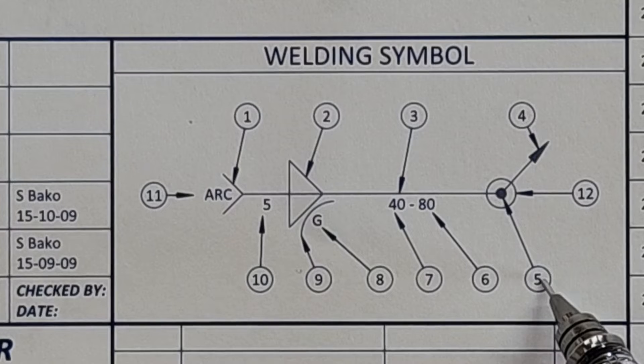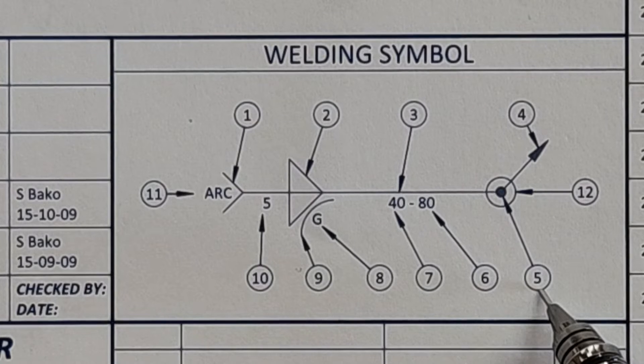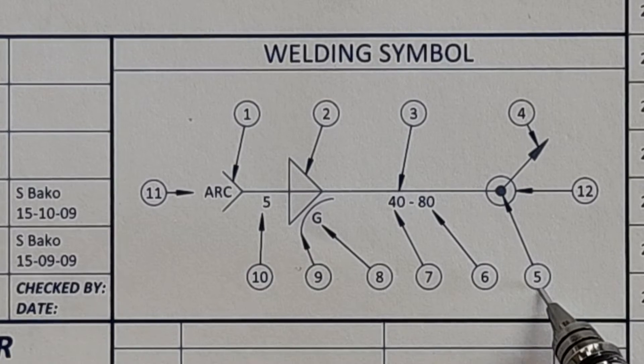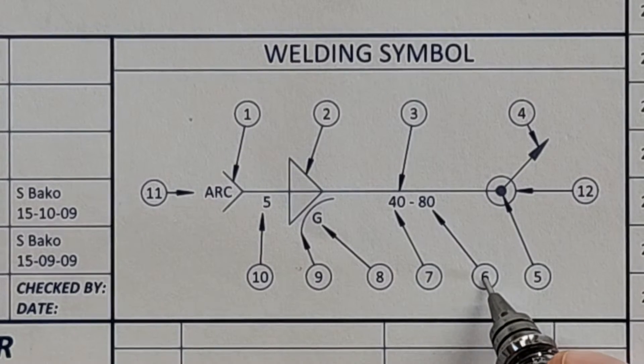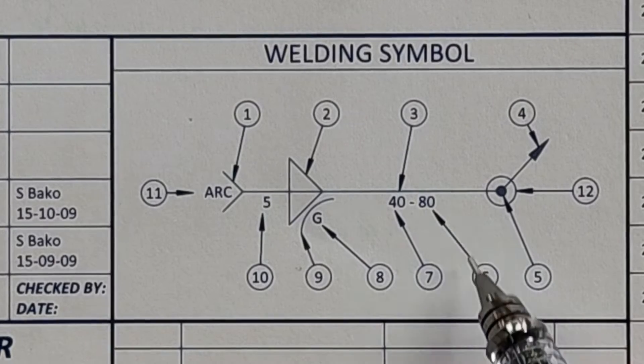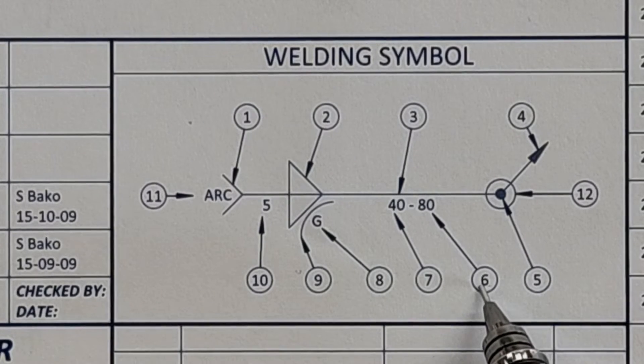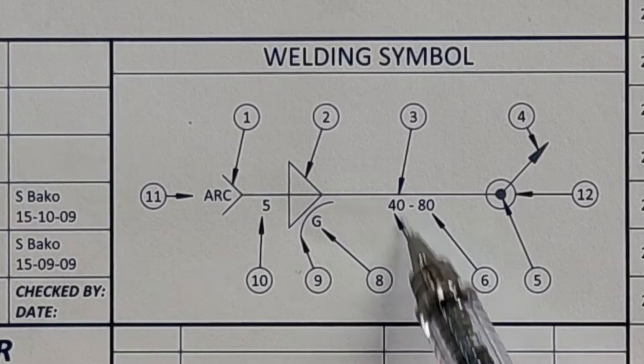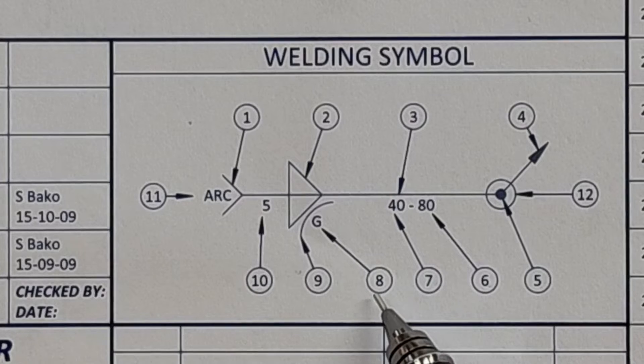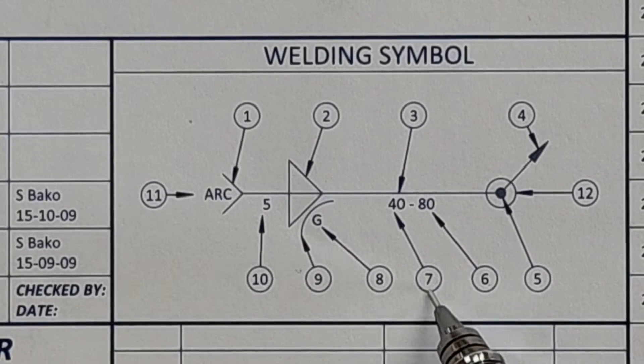Number 5 is the site welding symbol - in Afrikaans the terreinswijs symbool. Number 6 is the pitch of the weld - die steek van die swijs. Number 7 is the length of the weld - die lengte van die swijs.